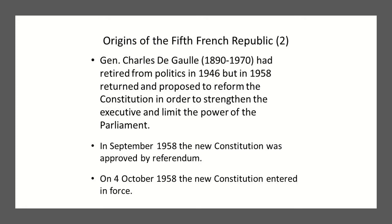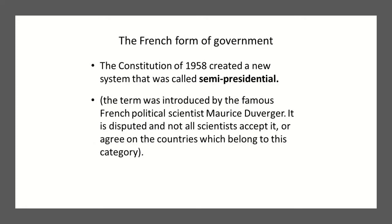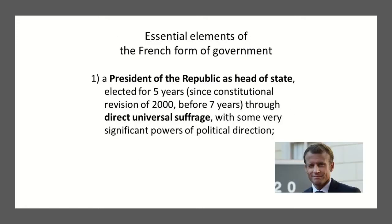In September 1958, the new French constitution was approved by referendum, and on October 4th, 1958, it entered into force. The constitution created a new system called semi-presidential — a term first introduced by French scientist Maurice de Viger, though it is disputed and not all scholars agree on which countries belong to this category.